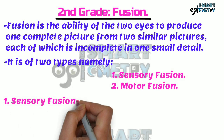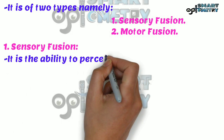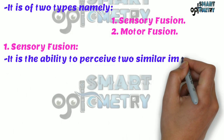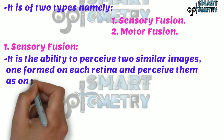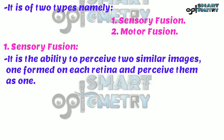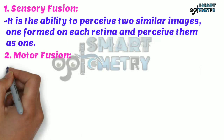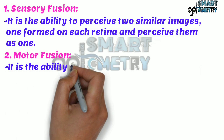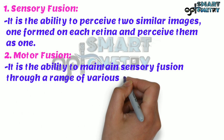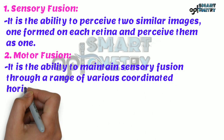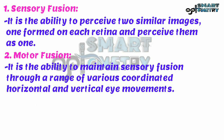Sensory fusion is the ability to perceive two similar images, one formed on each retina, and perceive them as one. Motor fusion is the ability to maintain sensory fusion through a range of various coordinated horizontal and vertical eye movements.